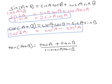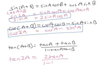And finally, in the tan one, I've got tan of A plus A, so that's tan of 2A. Tan A plus tan A, so that's 2 tan A, over 1 minus tan A times tan A, that's tan squared A. And that's the third double angle formula.